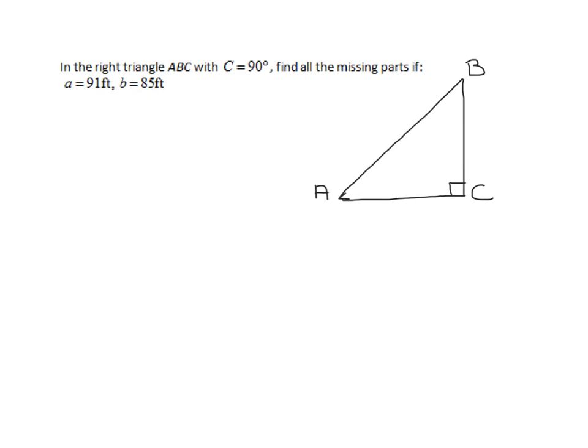But now be careful when you label the sides. The side opposite angle A is little a. The side opposite angle B is little b. And the side opposite angle C is little c. And we were given that C is 90 degrees. I've already put my right angle on there. We're also given a is 91 feet, and we're told that side b is 85 feet.